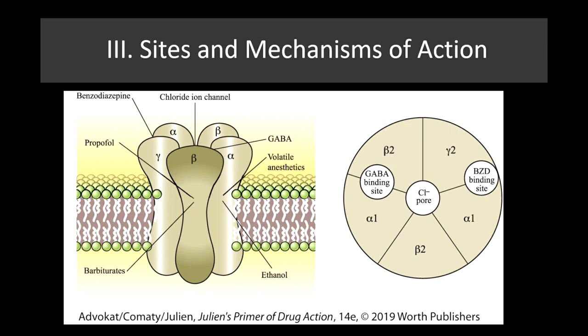Looking at the GABA receptor, we can see binding sites for ethanol, barbiturates, benzodiazepines, volatile anesthetics like halothane, and a receptor for propofol. Essentially what these do is alter the profile of the GABA receptor to make it more likely to inhibit that neuron.